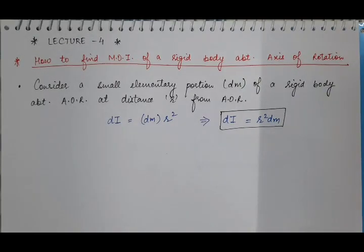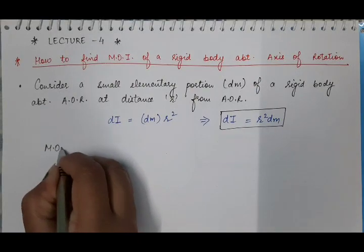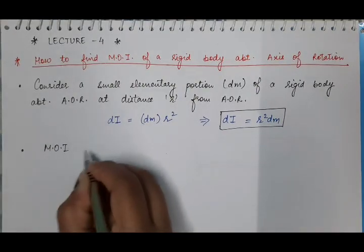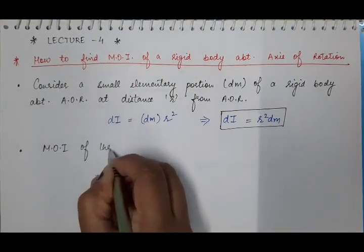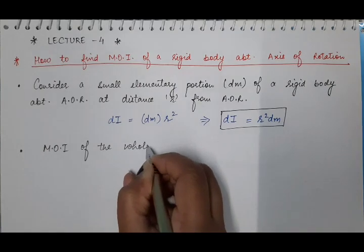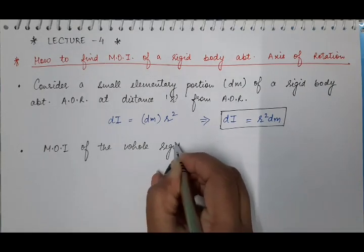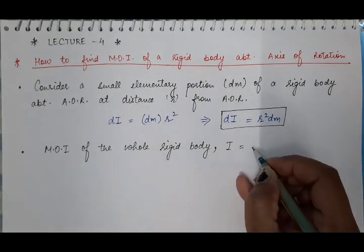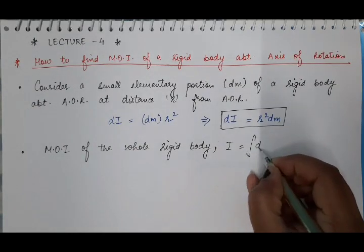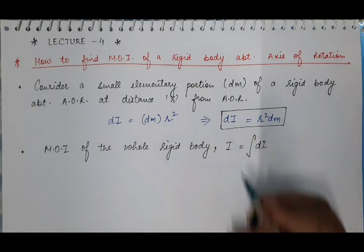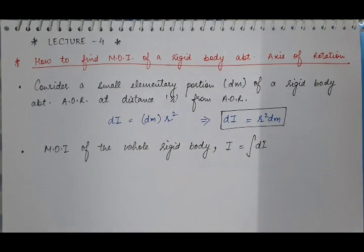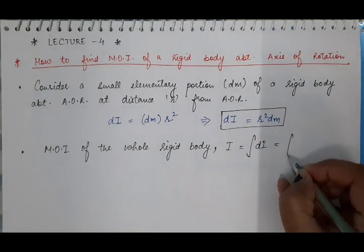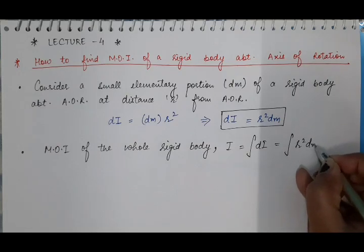Now what will be the moment of inertia of the whole body? The moment of inertia of the whole rigid body I is obtained by integrating the moment of inertia of the elementary portion, so I = ∫r² dm.